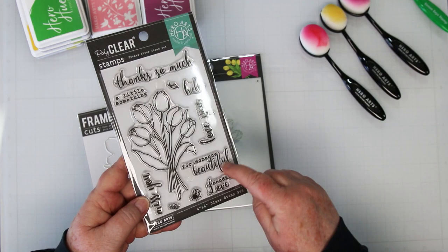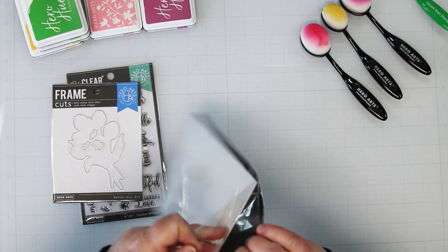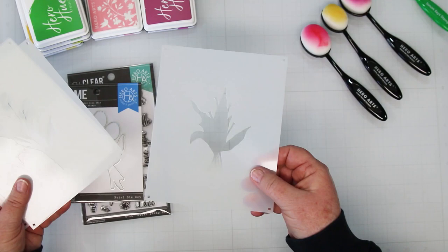Hi card making friends, it's Sandy here and today I have five card ideas to share with you created with the Hero Arts tulip bouquet stamp and die bundle and the color layering tulip bouquet stencil.